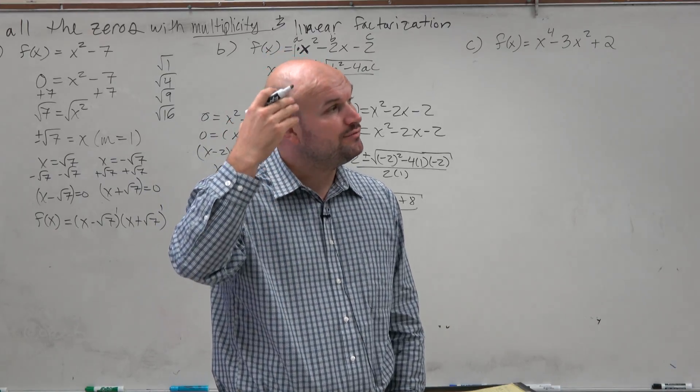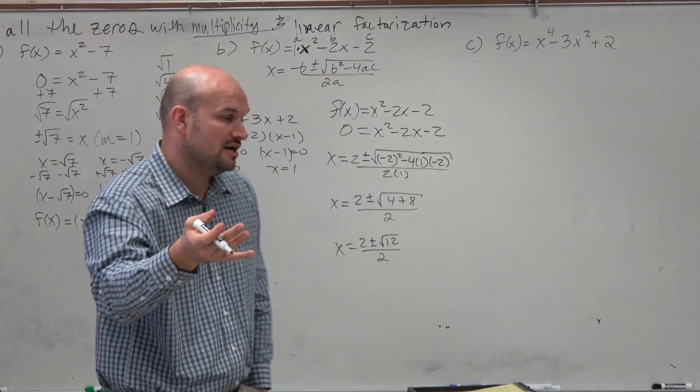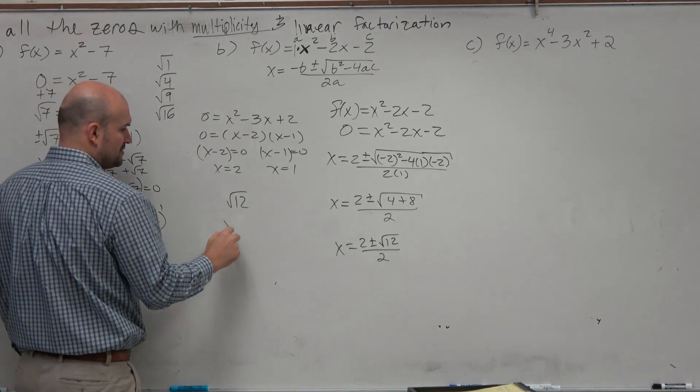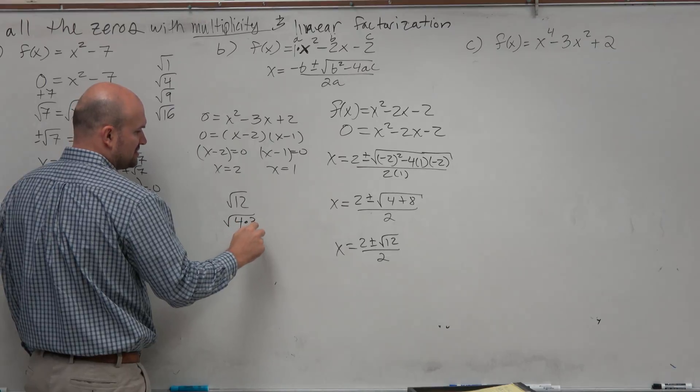So what we want to do is say, well can we rewrite 12 as a product of a square number and something else? Well, you can see that 4 is divisible into 12. So you guys would all agree that we can rewrite this as 4 times 3.